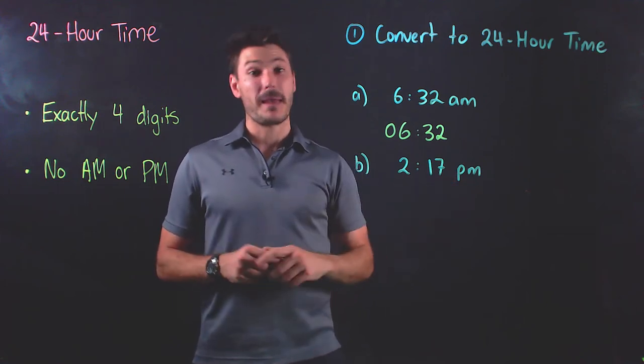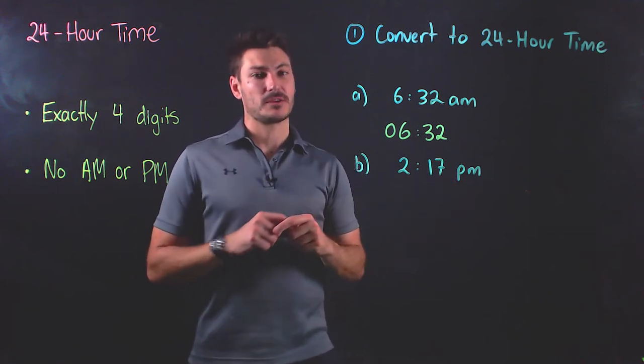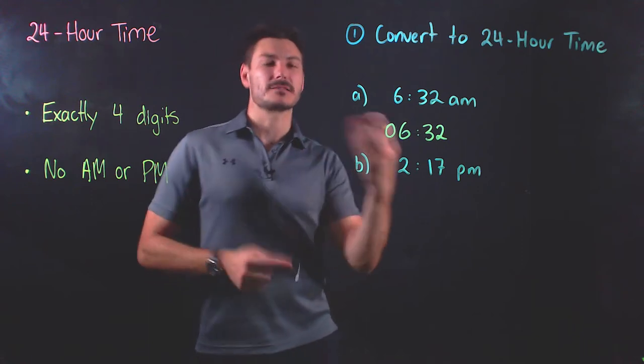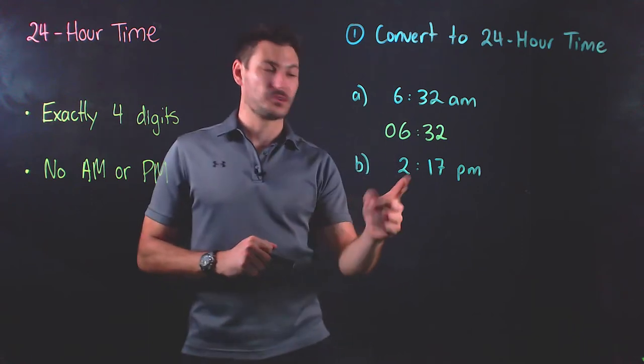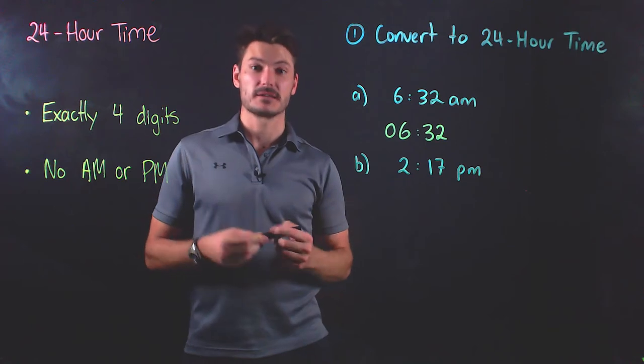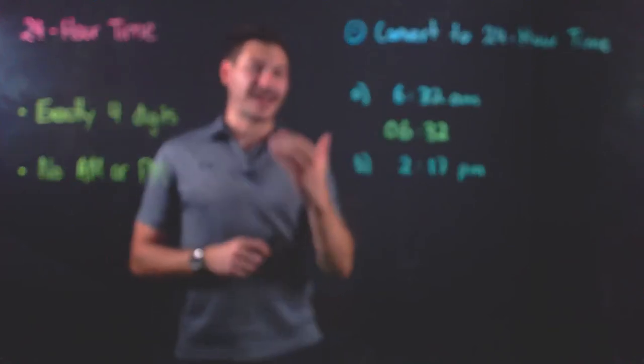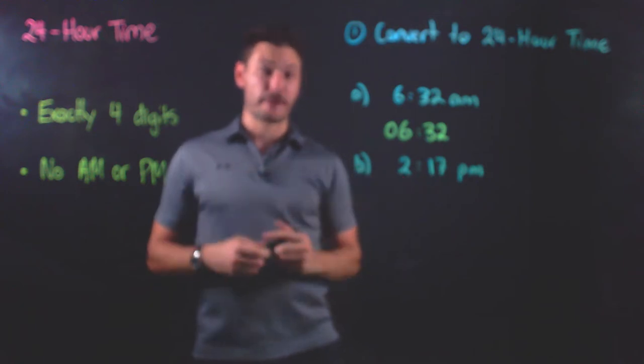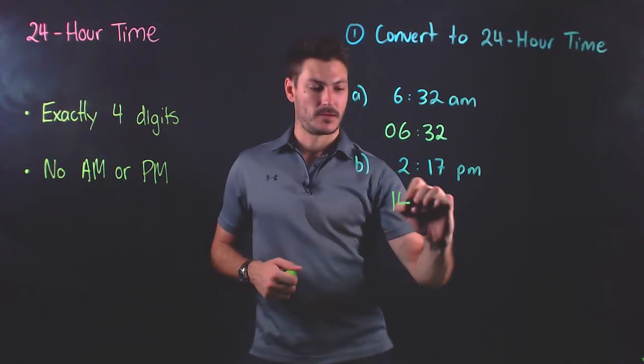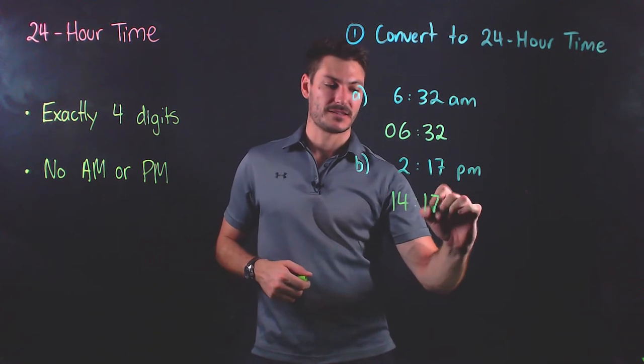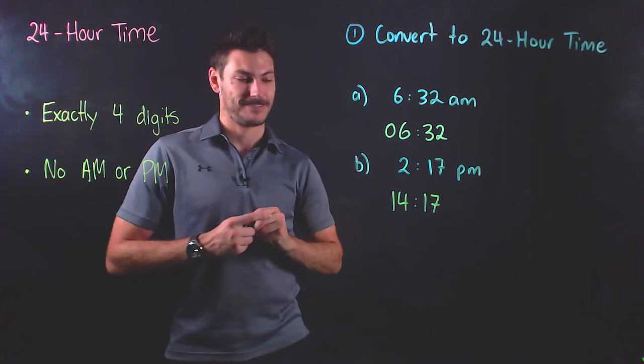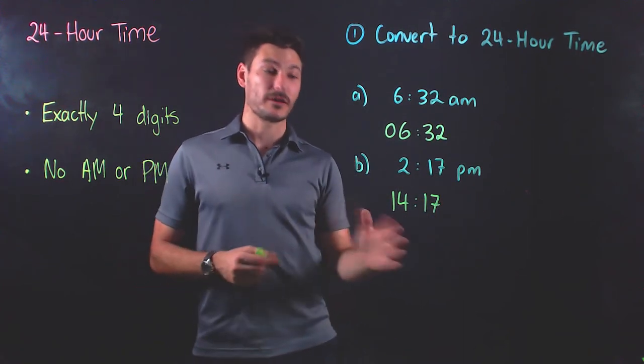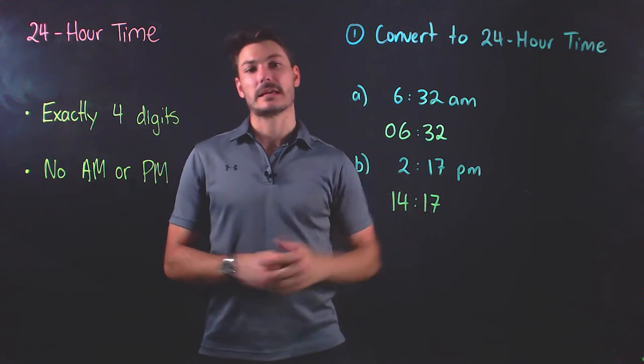If you've got a time that's in p.m., what you have to do is think about how many hours past midday is it. So 2 p.m. here is two hours past midday. That's what the two stands for. So we're gonna add it on to 12 because 12 is midday. So if we add the 2 to the 12, we get 14, 17 hours. 14, 17 is the 24-hour equivalent of 2, 17 p.m.